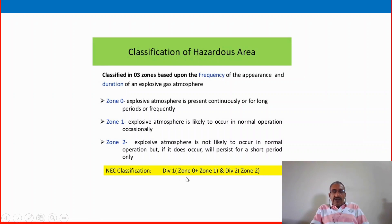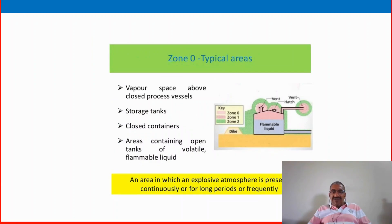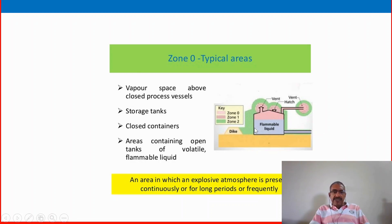The NEC classification gives Division 1 as Zone 0 plus Zone 1, and Division 2 as Zone 2. Zone 0 is defined as: vapor space above a closed process vessel, areas around vent hatches and vent lines, areas with flammable liquid storage tanks, closed containers, and areas containing open tanks of volatile flammable liquid — any area where an explosive atmosphere is present continuously for long periods or frequently. Zone 0 is very, very hazardous, dangerous and flammable.